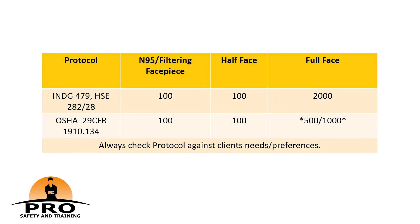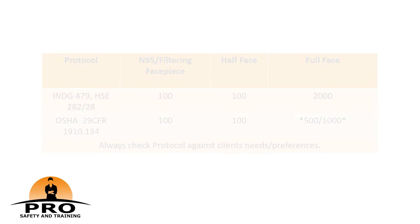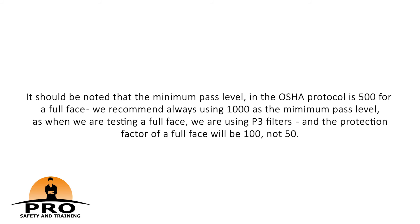For the OSHA protocol, an N95 respirator has a pass level of 100, a half-face is 100, and a full-face is 500 or 1000. It should be noted that the minimum pass level in the OSHA protocol is 500 for a full-face piece; however, we always recommend using 1000 as the minimum pass level, as when testing a full-face we use P3 filters and the protection factor for a full-face will be 100, not 50.